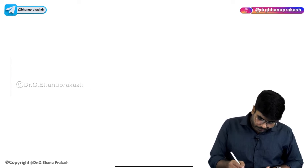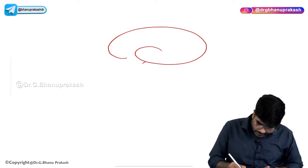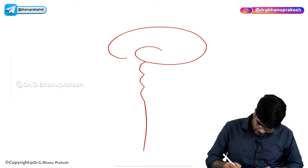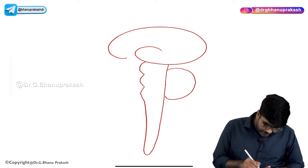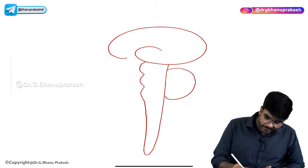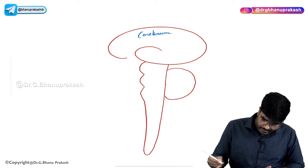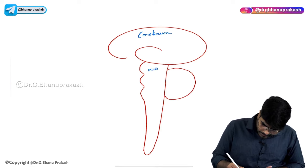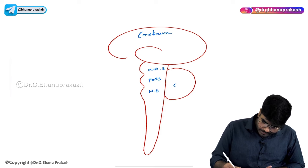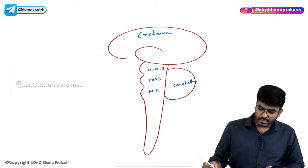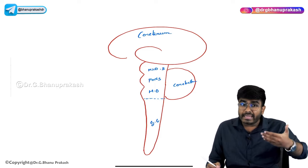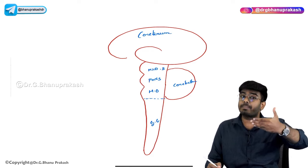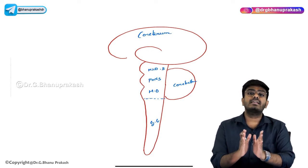Let me show you in a simple diagram. Imagine this is your brain with its different parts: Cerebrum, Midbrain, Pons, Medulla Oblongata, Cerebellum, and from there is the Spinal Cord. So what I've shown you — the Brain with the brain stem and Spinal Cord — all these structures constitute the Central Nervous System.